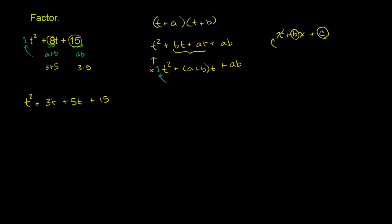And now I can factor it by grouping. These two guys right over here have a common factor t, and then these two guys over here have a common factor 5. So let's factor out the t in this first expression. So it's t times t plus 3 plus, and then over here if you factor out a 5, you get a 5 times t plus 3.